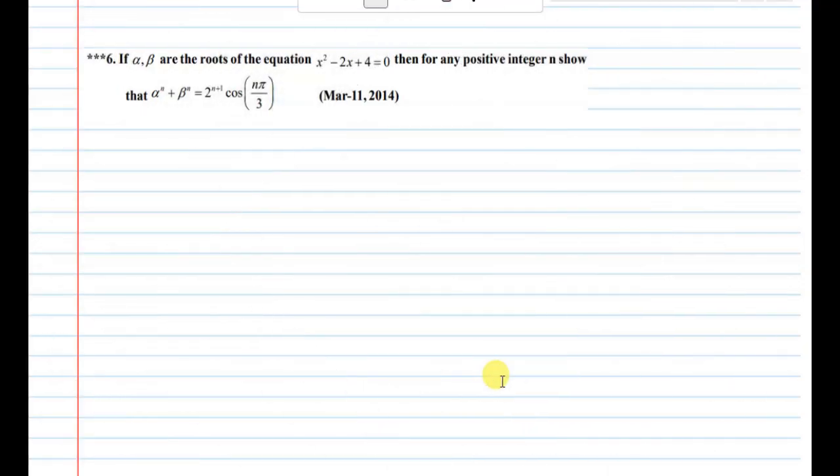Welcome to my online e-math classes. Before watching this video, subscribe this channel and give a like. If alpha and beta are the roots of the equation x squared minus 2x plus 4 equal to 0, then for any positive integer n, show this result.